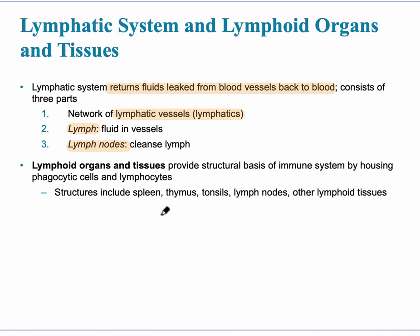These structures include the spleen, the thymus, tonsils, lymph nodes, and various other lymphoid tissue.